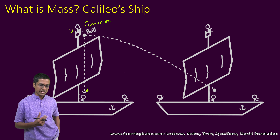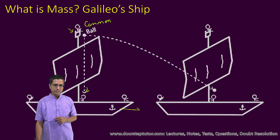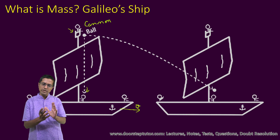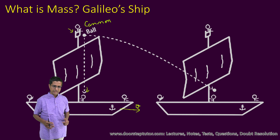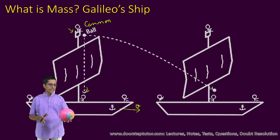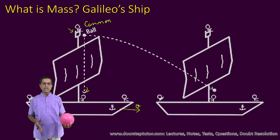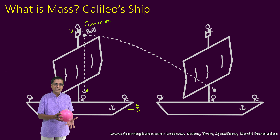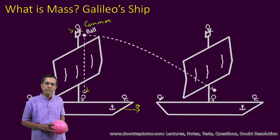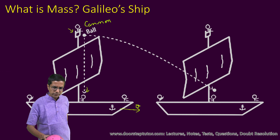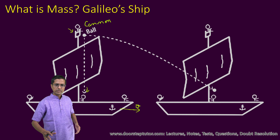Now what happens if the ship were not stationary but moving with a uniform speed V in the forward direction? From our common experience, we know that if I have a ball and throw it up, it comes straight down — whether I'm in a stationary room or in a train moving with uniform velocity. The ball just comes straight down; I do not have to move my hand. That is what they also thought.